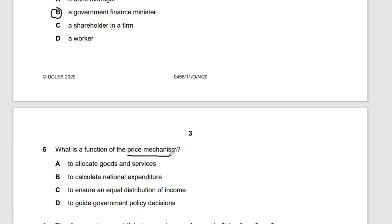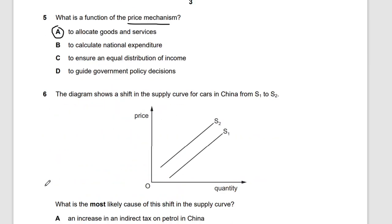Question five: what is the function of the price mechanism? The price mechanism is used for the allocation of goods and services. If there's more demand for something, it will allocate more of those goods. The answer is A.